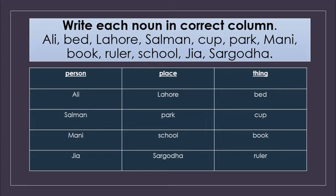Money is a thing. Book is a thing. Ruler is a thing. School is the name of a place. Jia is the name of a girl. And Sargoda — our beloved city — is the name of a place. So I have separated them according to the given columns: person, place and things.